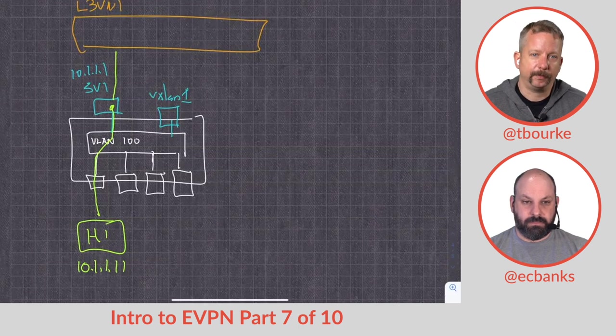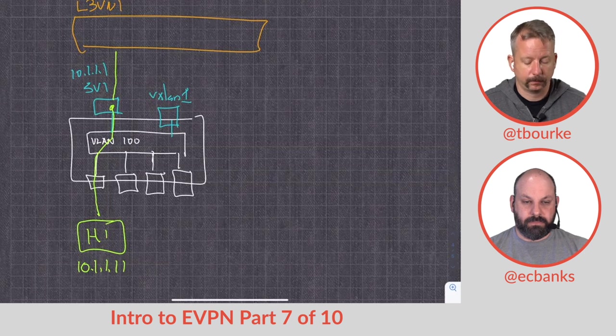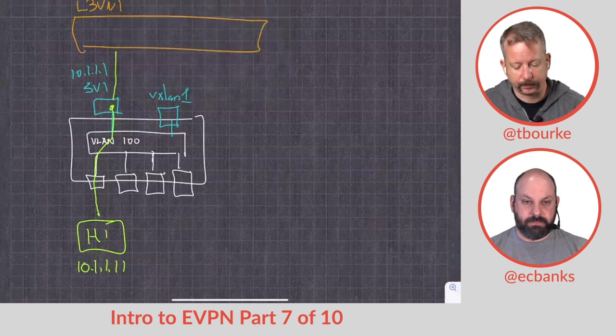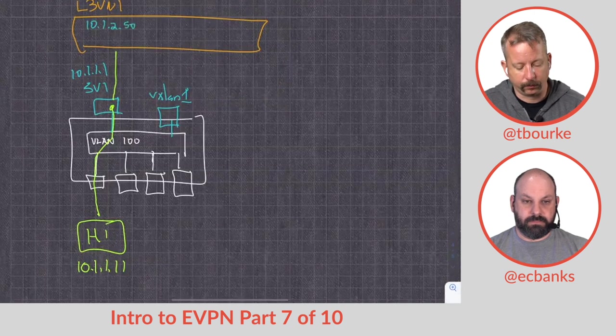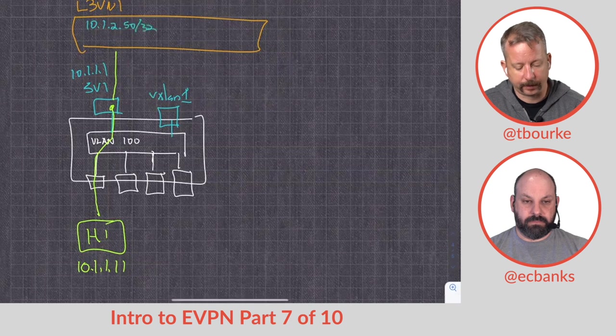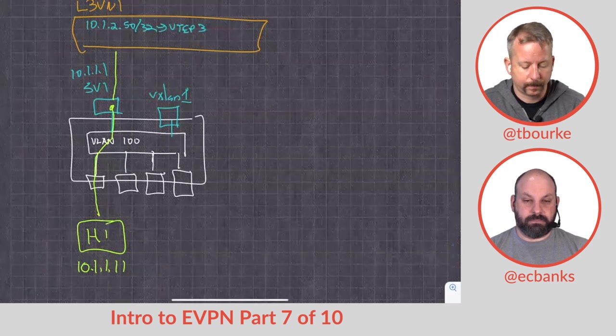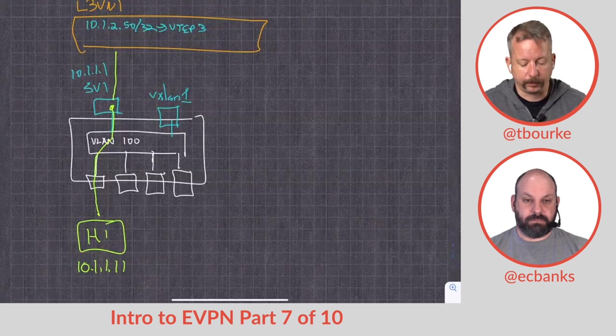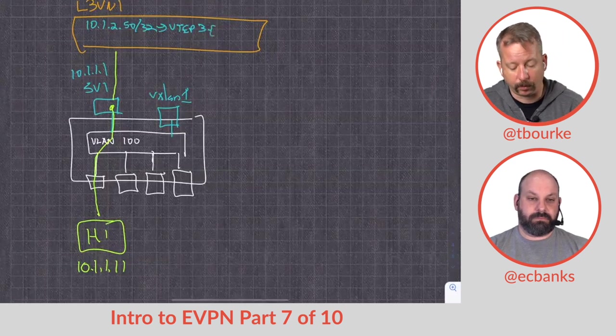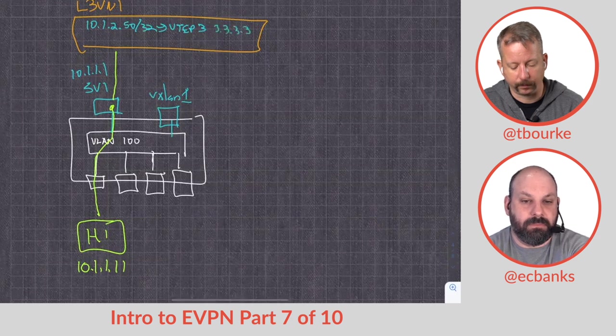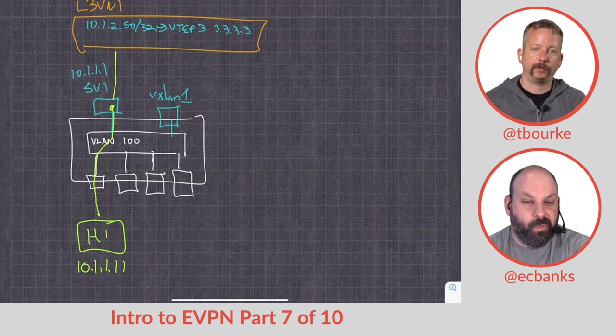So that is going to go up into our layer three VNI. And our layer three VNI is going to have host routes. And it's going to have a route that looks like this: 10.1.2.50/32, because we're talking host routes. It's going to be on VTEP3, which could actually be multiple IP addresses if it's... actually, no, it won't be multiple IP addresses typically. So it'll be like 3.3.3.3. So that's our host reachability.